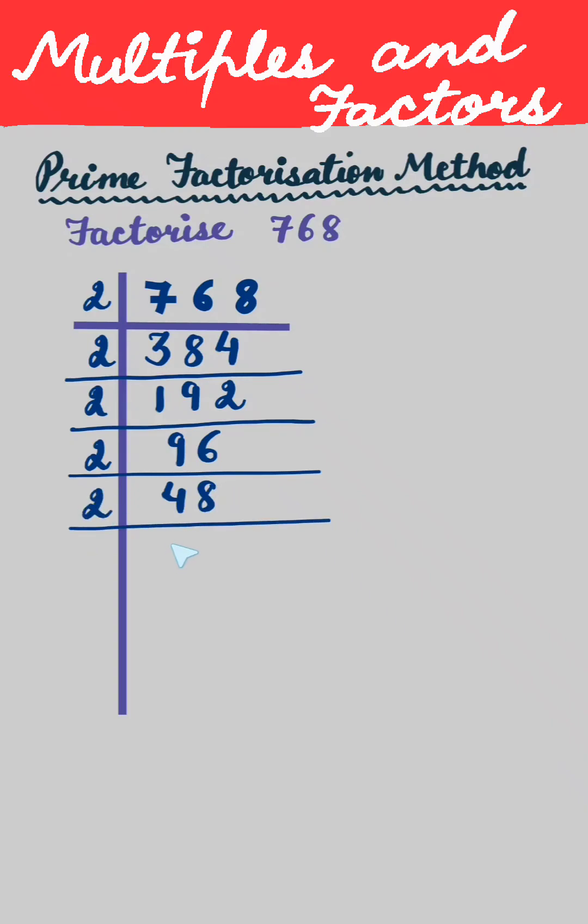Again it goes into 2. 2 times 2 is 4, 2 times 4 is 8. Now again it goes into 2. 2 times 1 is 2, 2 times 2 is 4. Again it goes into 2. 2 times 6 is 12, then again it goes into 2 or 3.